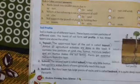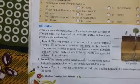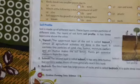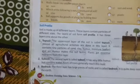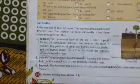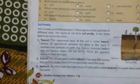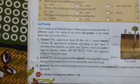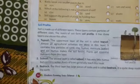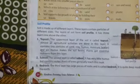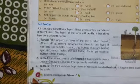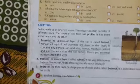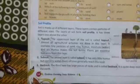The soil profile has generally three layers: topsoil, subsoil and bedrock. The uppermost layer of the soil is called the topsoil. Almost all agricultural activities are done in this layer. Humus makes the soil fertile, and plants get essential nutrients from only this topsoil.